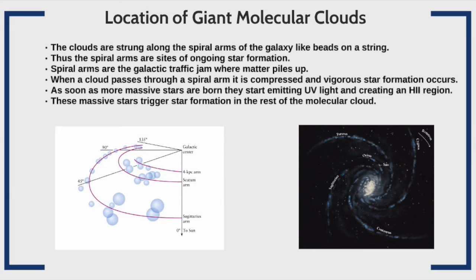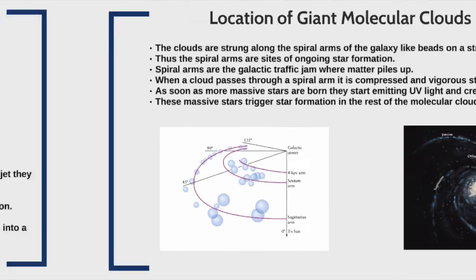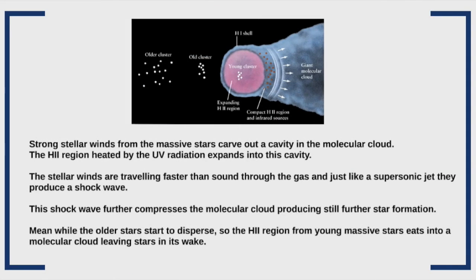Most giant molecular clouds are located in the arms of our galaxy's spiral, where mass piles up in a kind of cosmic traffic jam. As the spiral arms pass through these clouds, they can compress the cloud and trigger more star formation. As stars form, the larger stars produce strong solar winds that carve out holes in the molecular cloud. The heated H2 regions cause cavities to expand, and the stellar winds — moving faster than the speed of sound — produce supersonic shockwaves. These shockwaves can create density regions within the cloud, simultaneously eroding and triggering further star formation.